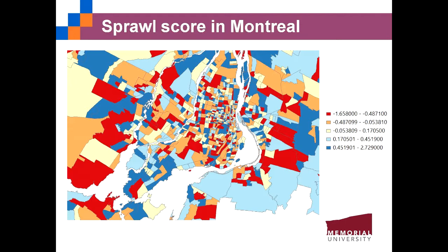The last example is the sprawl score for Montreal, where the pattern is more mixed. Generally, the downtown area is less sprawled or more compact compared with other census tracts. Some census tracts — for example, the airport area — are found to be most sprawled.